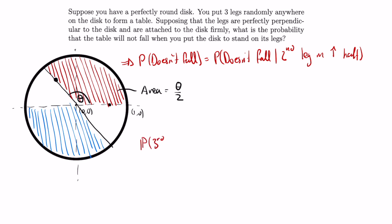Thus, the probability that the third leg is in the blue shaded region is equal to the area of the blue shaded region divided by the area of the whole circle, which is theta over 2π.